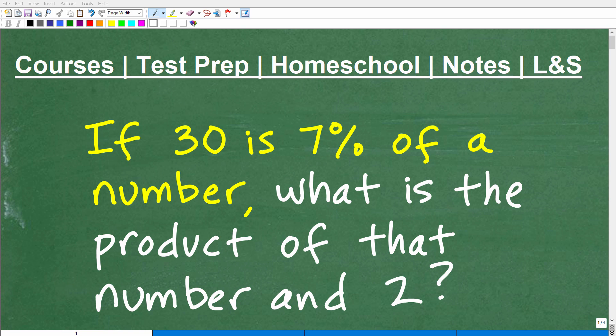Okay, let's go ahead and figure out the solution to this nice little math problem here. Now, the first step to solving any math problem, especially a word problem, is to read the problem. So let's go ahead and do that right now. It says, if 30 is 7% of a number, what is the product of that number and 2?